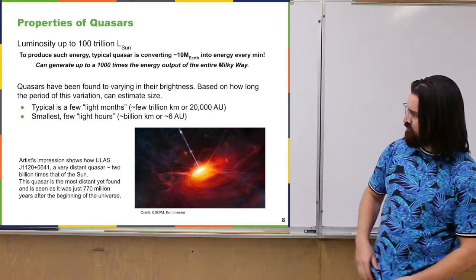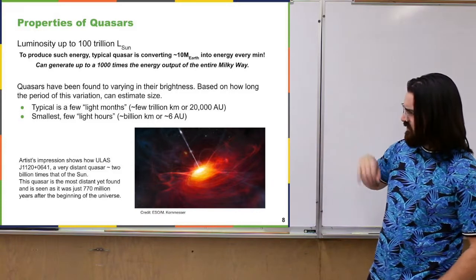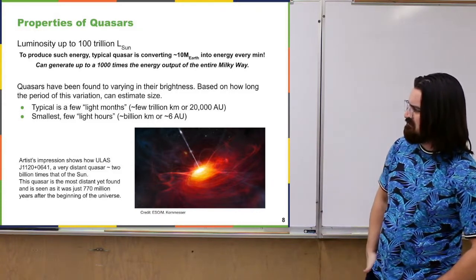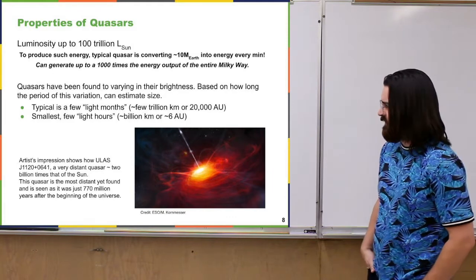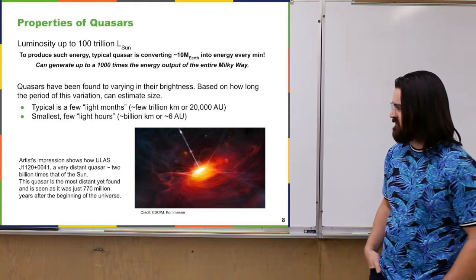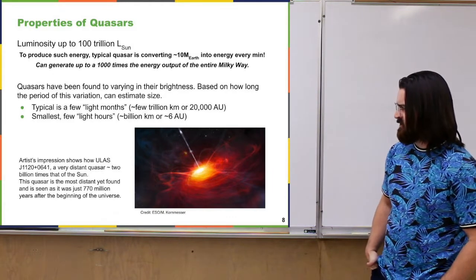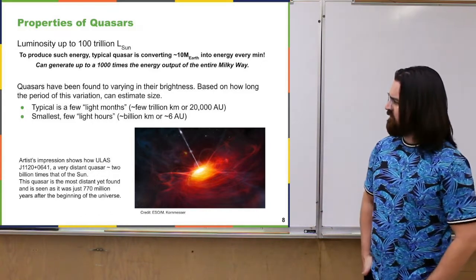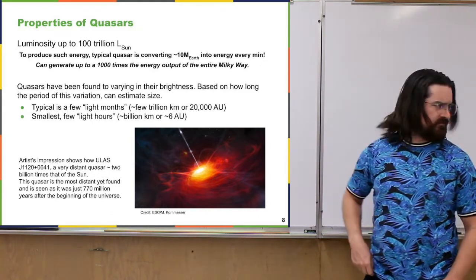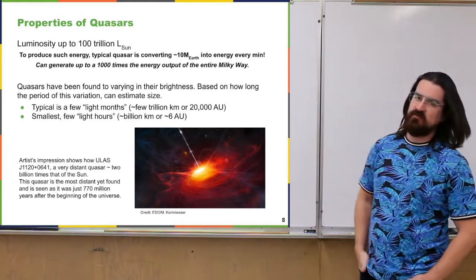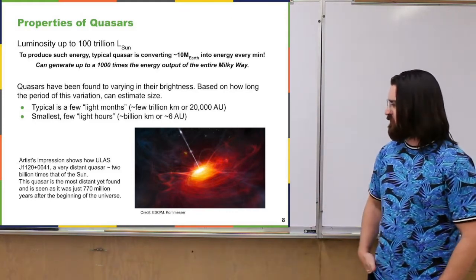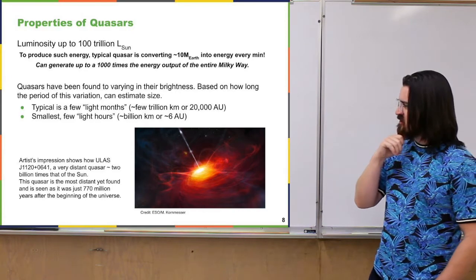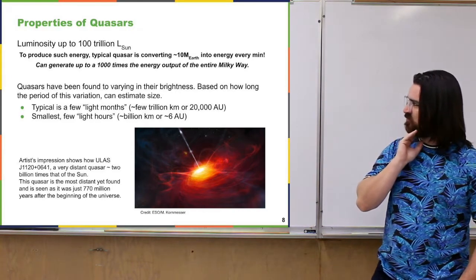That particular quasar shown is J1120+0641, something like two billion times the mass of the sun, and one of the most distant quasars found — existing only about 770 million years after the beginning of the universe.